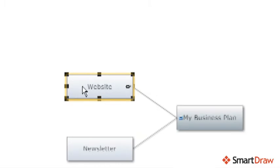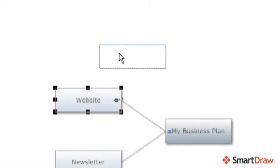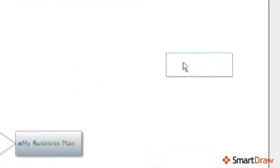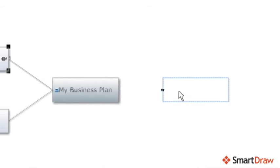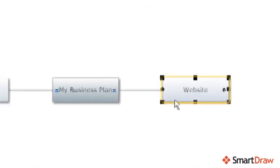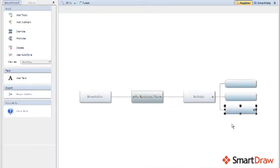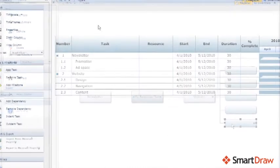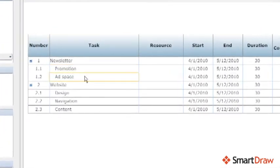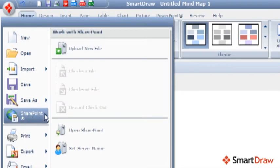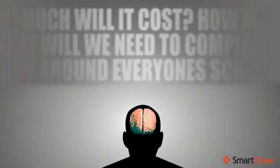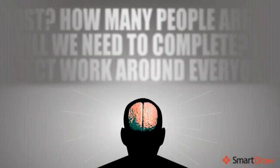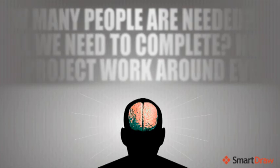Moving topics around is as simple as clicking and dragging. Just move a topic where you want and SmartDraw will fill in the connector lines for you. Break your tasks into smaller ones. Schedule your tasks with a project chart. When you're done, share your project by email or publish it to your SharePoint server. Let SmartDraw take your ideas from conception to completion.